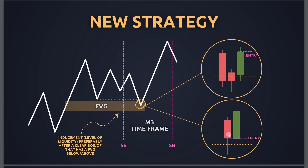The second entry type is price closing below the liquidity level — maybe another candle, then another — but I don't want to see price hanging around below for too long. I want a quick rejection. Whenever price comes back into the range with a displacement, we enter at the high of the bullish candle. Those are the two entry types.